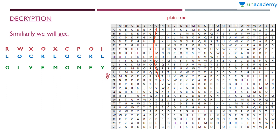To summarize: for encryption, find the row of the key letter and column of the plain text letter — their intersection is the cipher text letter. For decryption, find the row of the key letter, locate the cipher text letter in that row — the corresponding column is the plain text letter. That is the Vigenère cipher. I hope you all understood. Thank you for watching.